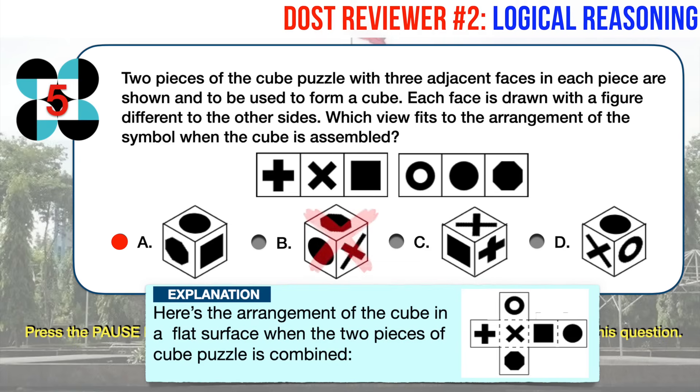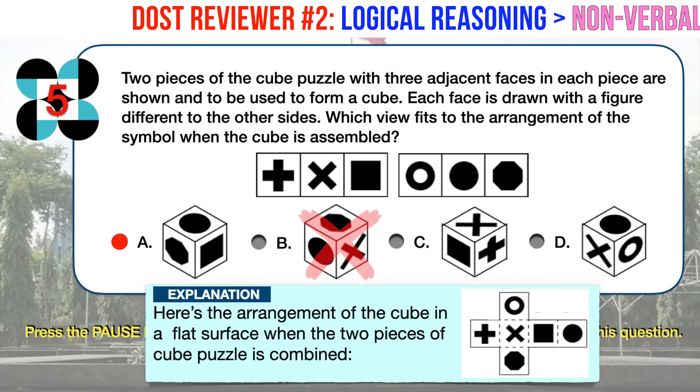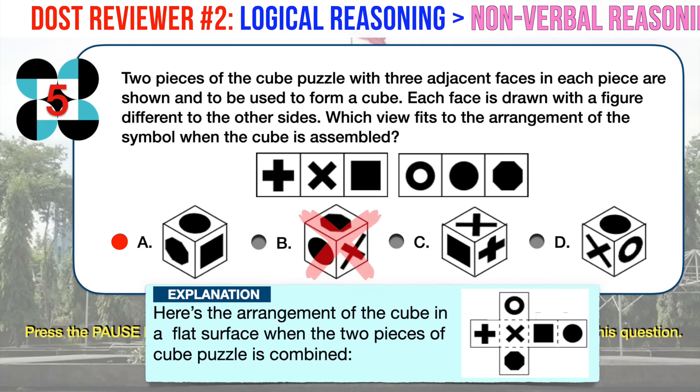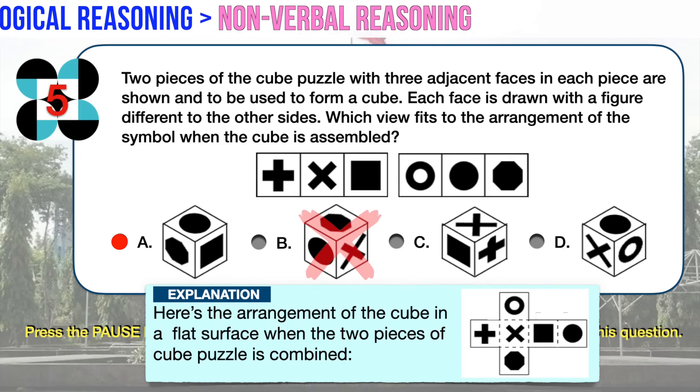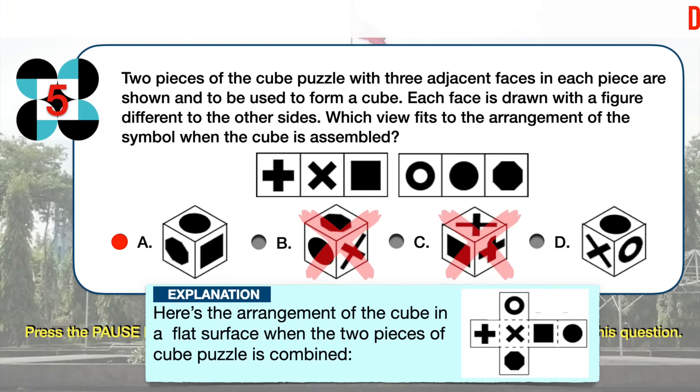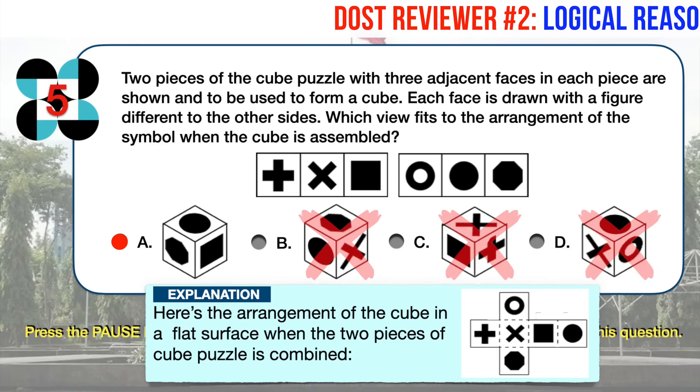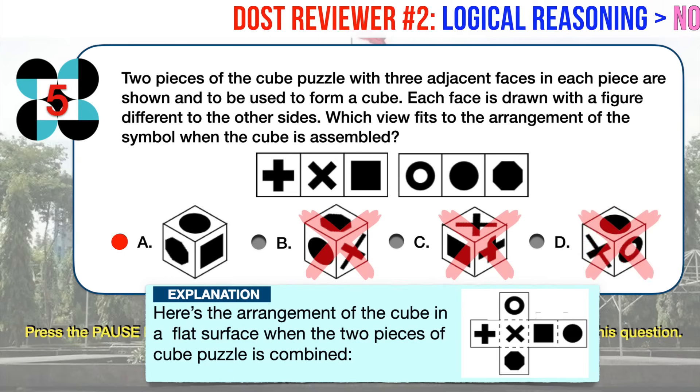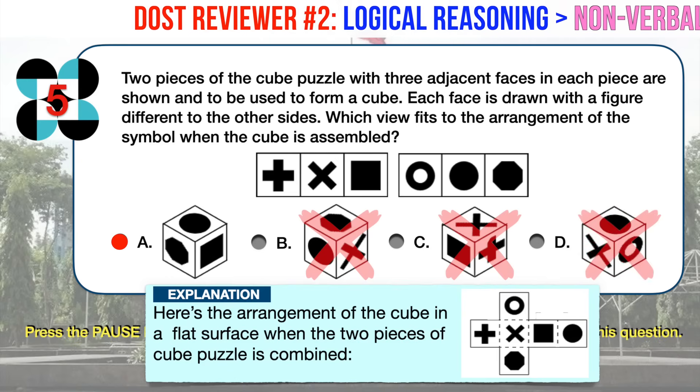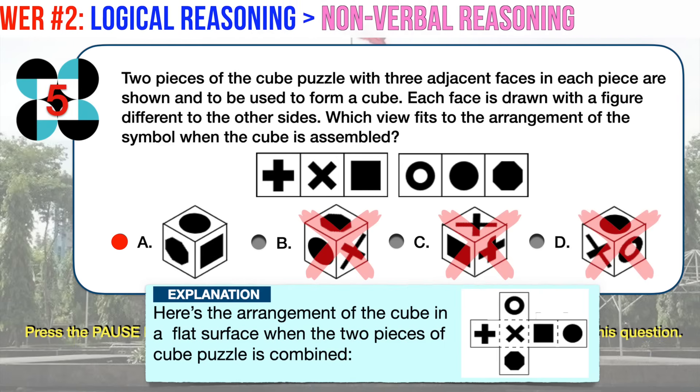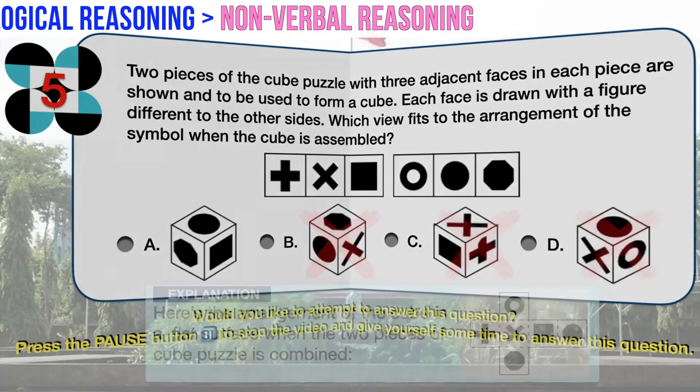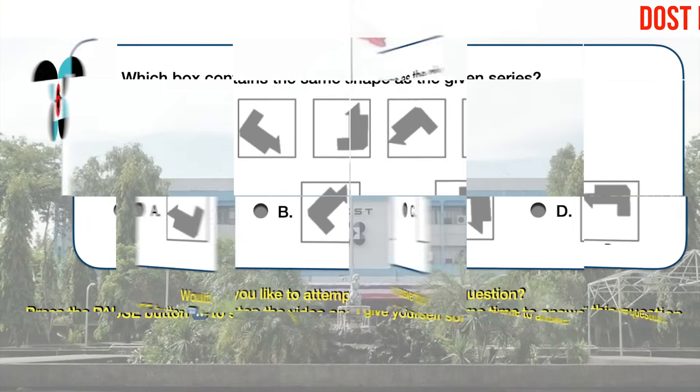With the resulting cube, the cube view in answer choice B is not possible, since the faces with X mark and shaded circle cannot be adjacent to each other. Answer choice C is also not possible, since the plus mark and the square mark cannot be adjacent as they are opposite each other. Answer choice D is also not a possible cube view. The X mark and the shaded circle cannot be adjacent to each other. Only the cube view in answer choice A is possible.